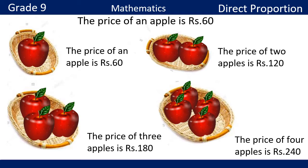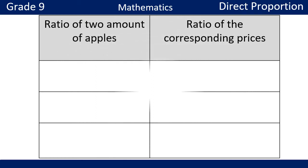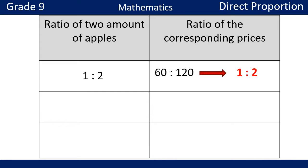The ratio between number of apples 1 to 2, the ratio of the corresponding prices 60 to 120, can be written in simplest form as 1 to 2. The ratio between number of apples 2 to 3, the ratio of the corresponding prices 120 to 180, can be written in simplest form as 2 to 3.